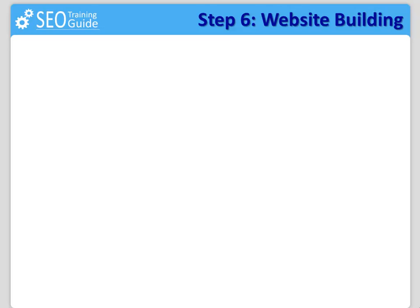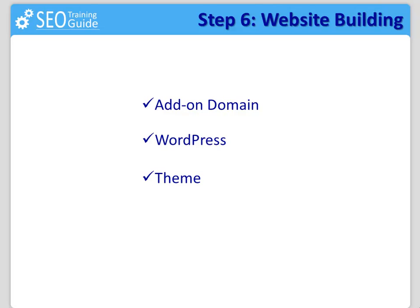Those vital components are: number one, add-on domain; number two, WordPress installation; number three, theme installation; and number four, plugins installation.